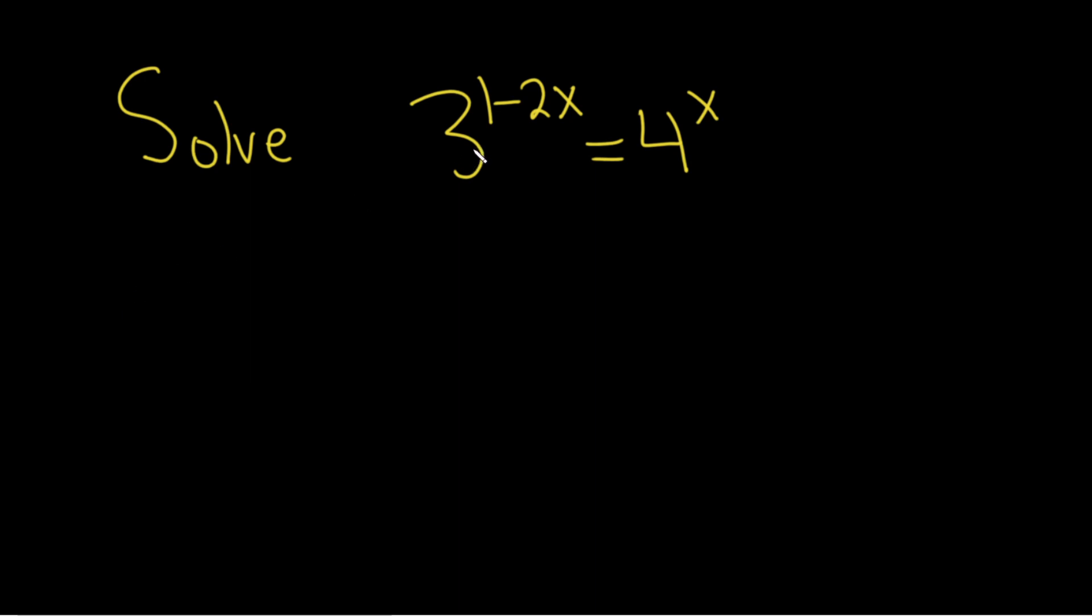Solve 3 to the 1 minus 2x equals 4 to the x. Solution.